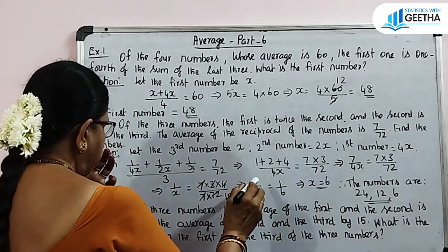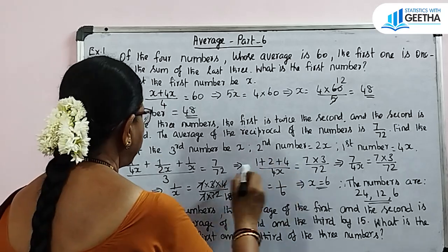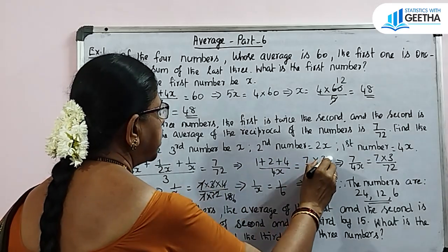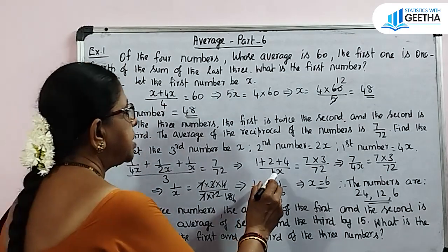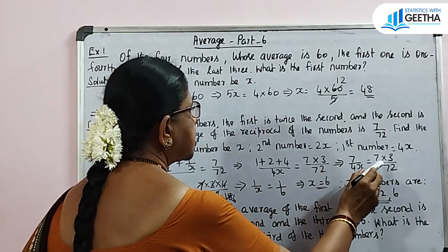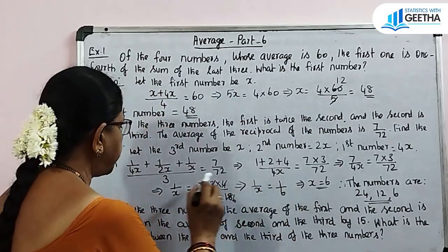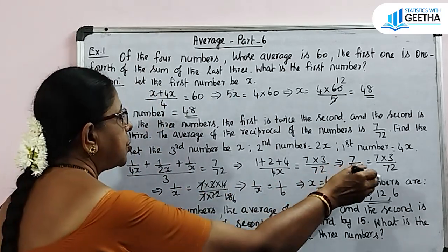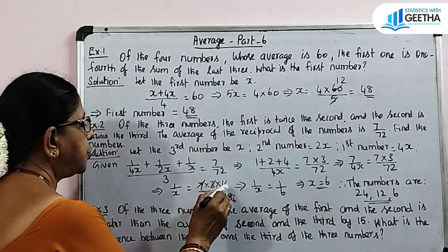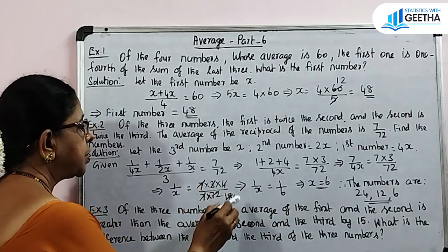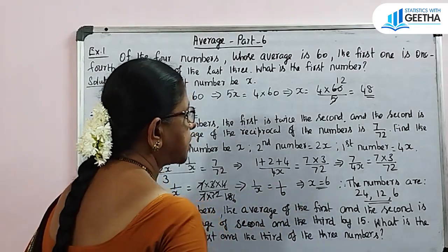Taking LCM as 4x and simplifying: 1 by 4x plus 2 by 4x plus 4 by 4x divided by 3 equals 7 by 72. Simplifying gives 1 by x equals 1 by 6, therefore x equals 6.